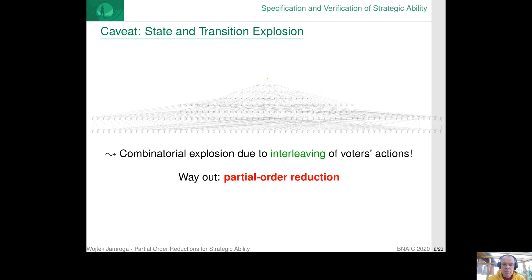What can we do to mitigate that? So instead, we can try to use a technique for model reduction. So instead of the full model, including all the possible interleavings, we would like to have a model that includes only some of those interleavings. And there is a technique for achieving that called partial order reduction.